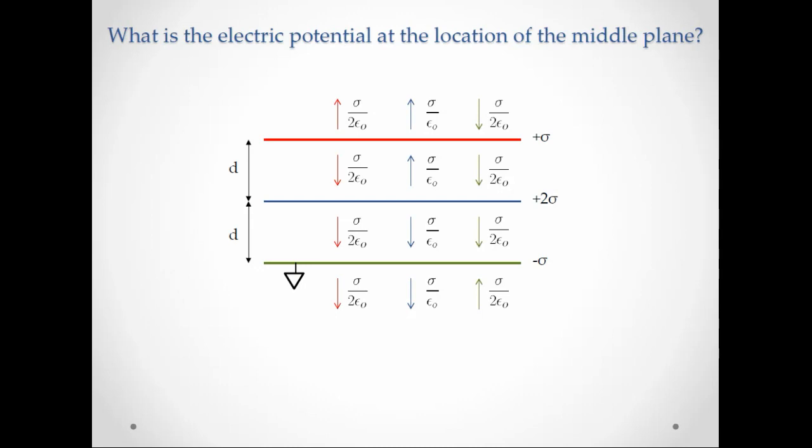And so the total electric field in each region of space is just the sum of those three components in each region. So I went through the math and calculated them out.